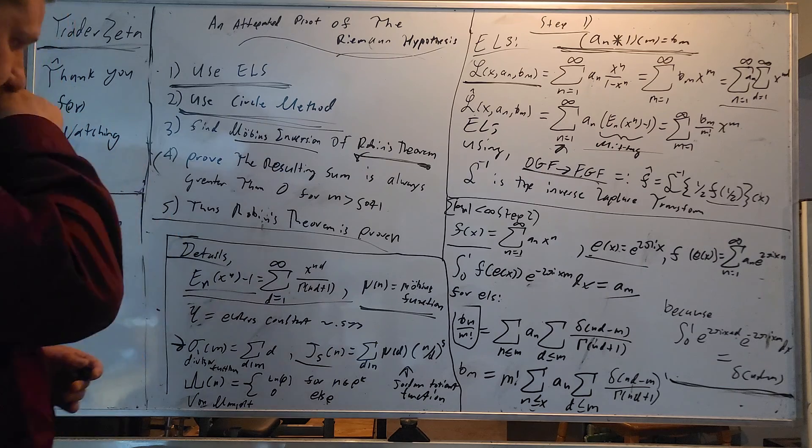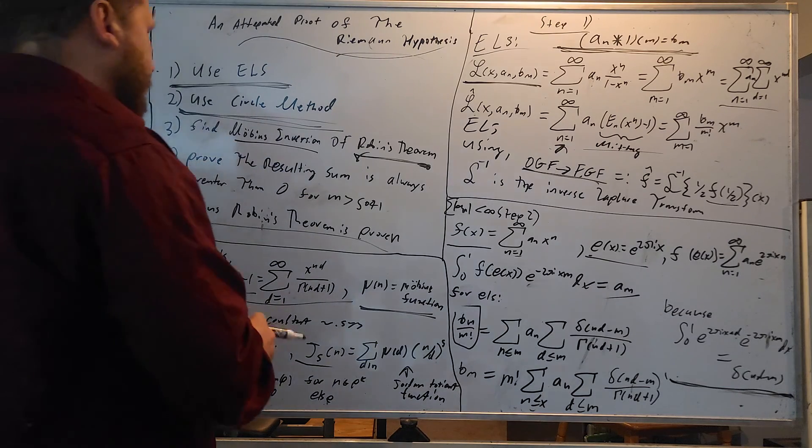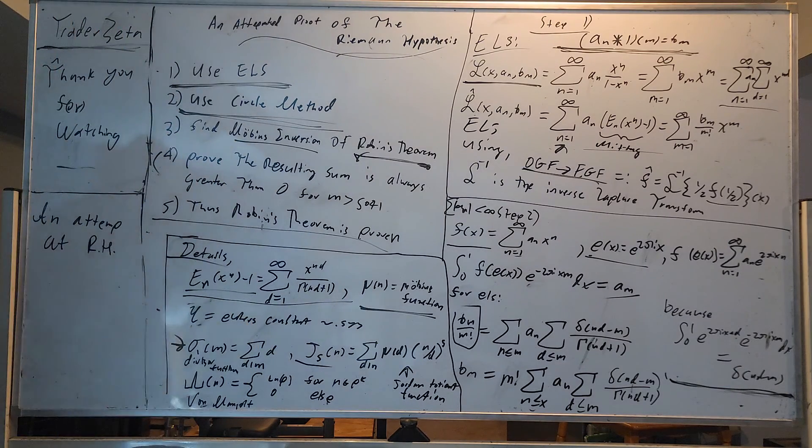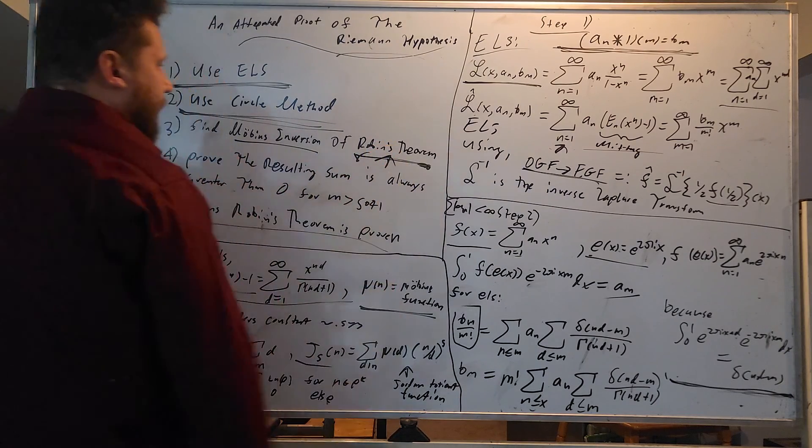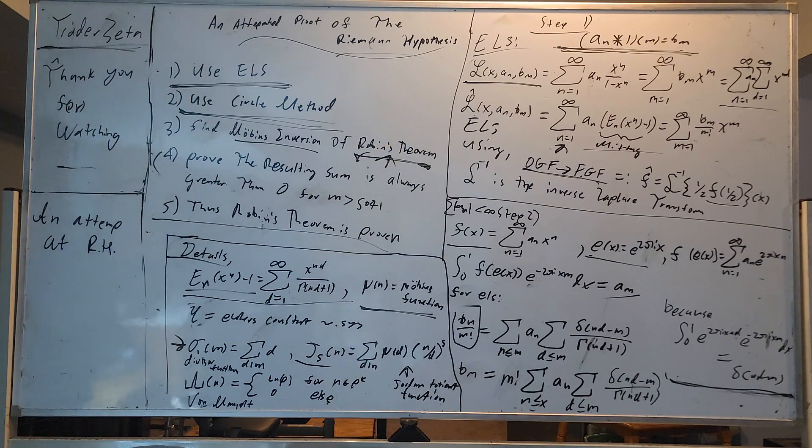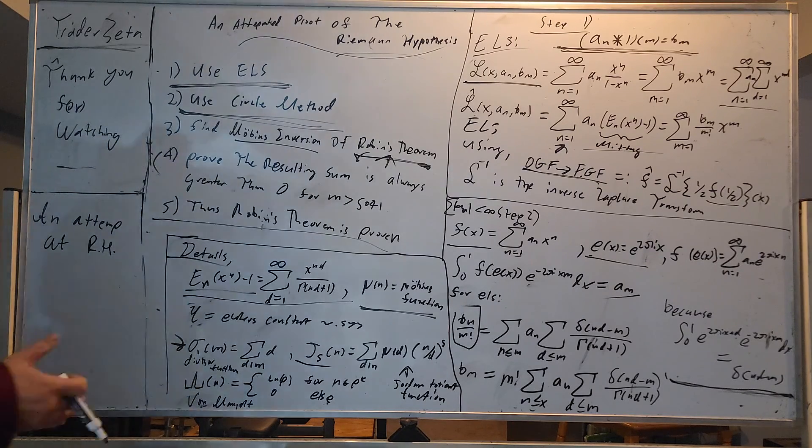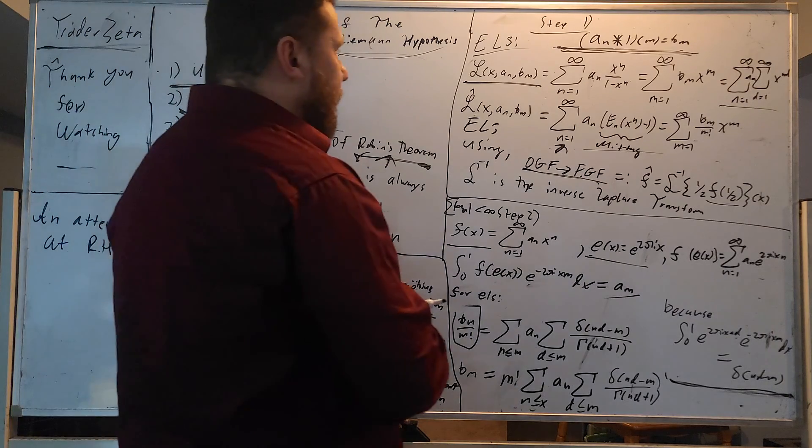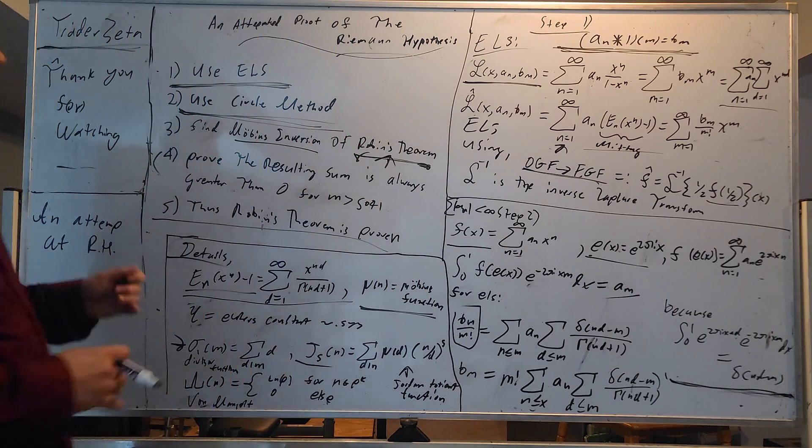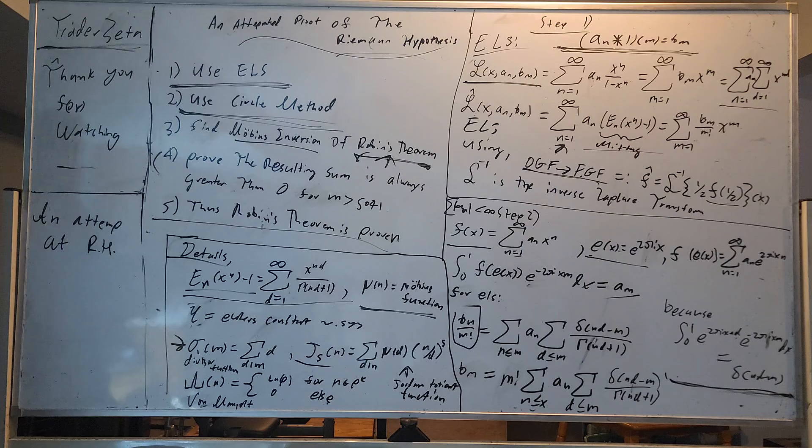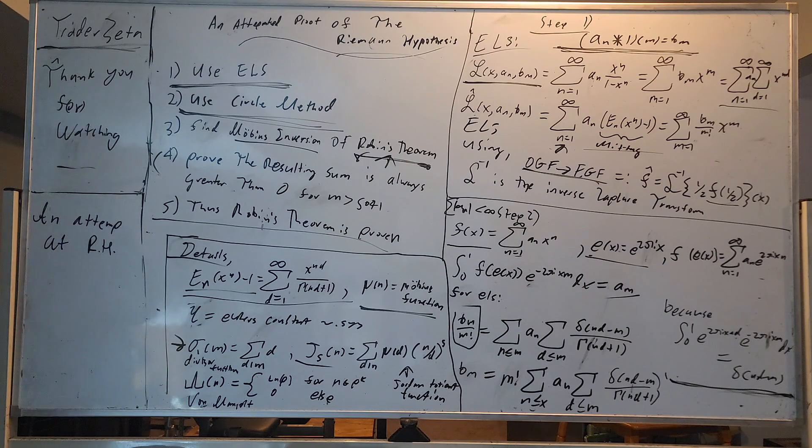So say for example, we have the generating function f of x, sum n equals 1 to infinity, a sub n, x to the n, and of course this sum right here has to converge. That in fact is actually why we have the divided by m factorial is because this condition is satisfied. This is obviously satisfied for the things that we're using it for today.